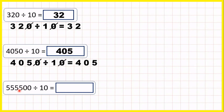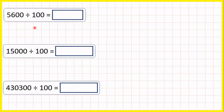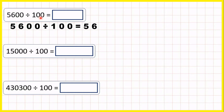And it's the same for 555,500 divided by 10 — we cancel the end zeros and then we have 55,550. Cancelling the zeros when you're dividing by 10 is a nice easy trick. Now we have multiples of 100, numbers that end in two zeros, and we're dividing by 100. 5,600 divided by 100 is 56 because we can cancel two end zeros and then we have 56 divided by 1, which is just 56.